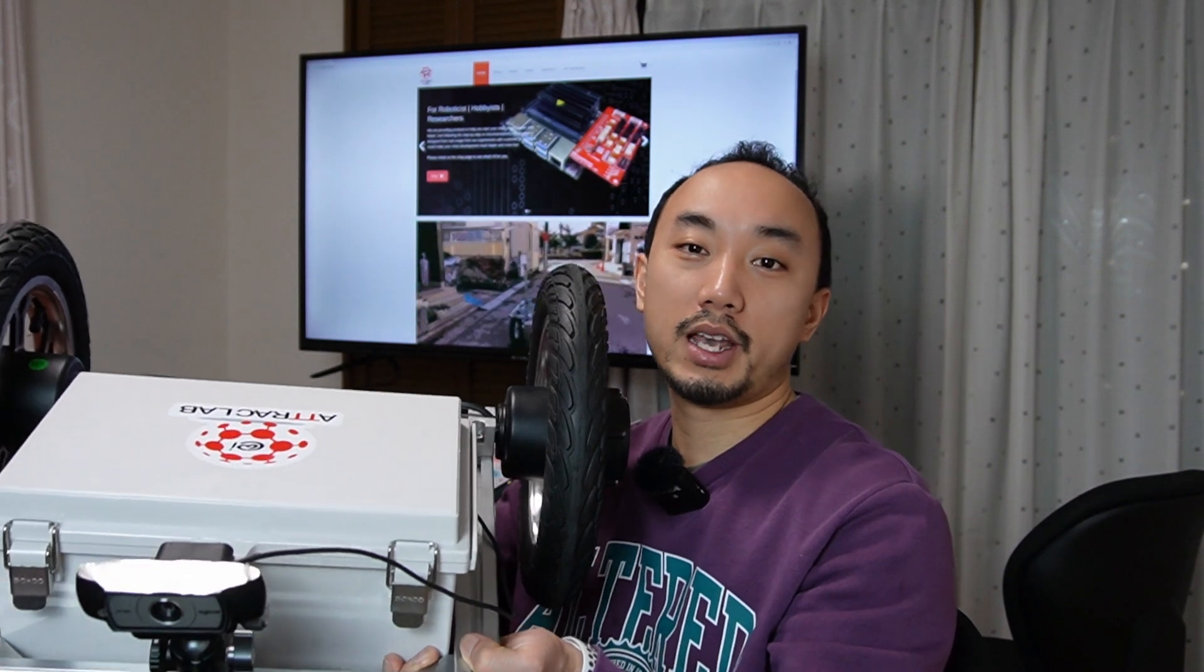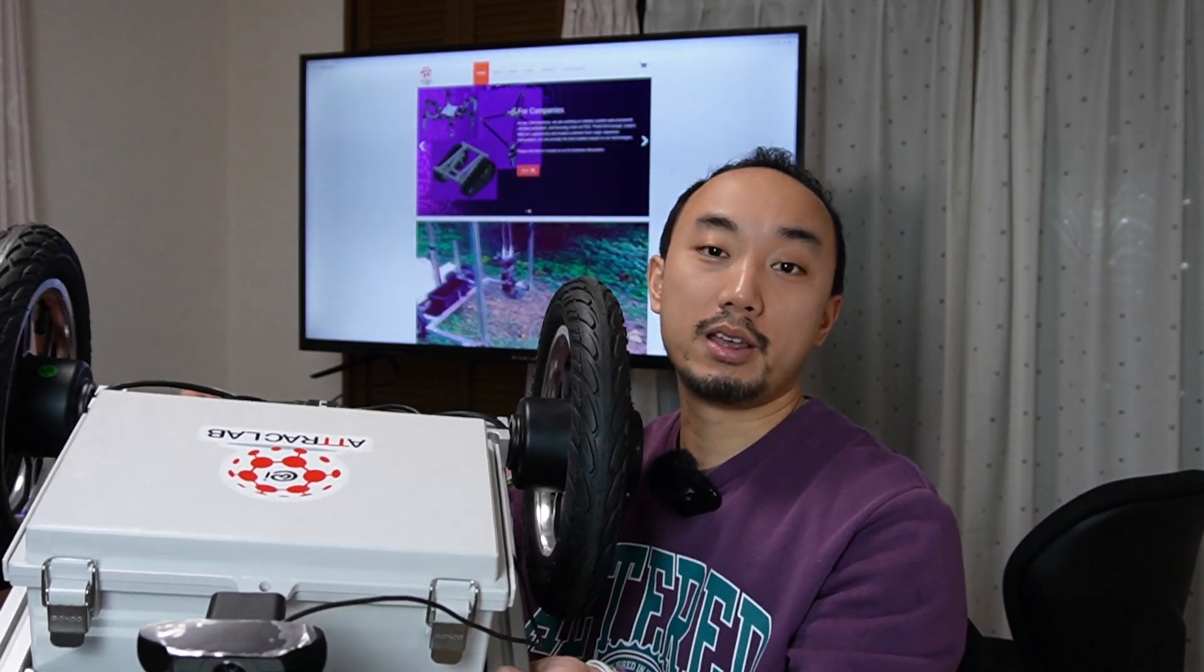And that is how we can use this AT Card Basic platform with AI image segmentation. Of course, it still requires more tuning and improving the algorithm to make the robot navigation work much better. The purpose of this demonstration is to show how we can use this AT Card Basic with your creative project.